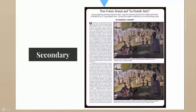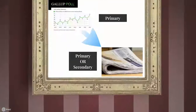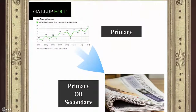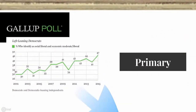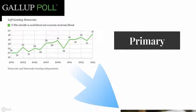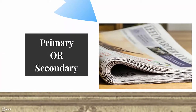This political poll and its results are original content, so they are primary sources. If a newspaper publishes the results of the poll, the article is a primary source, since it's presenting the original content. If it publishes commentary and interpretation of the results, the newspaper article is a secondary source.